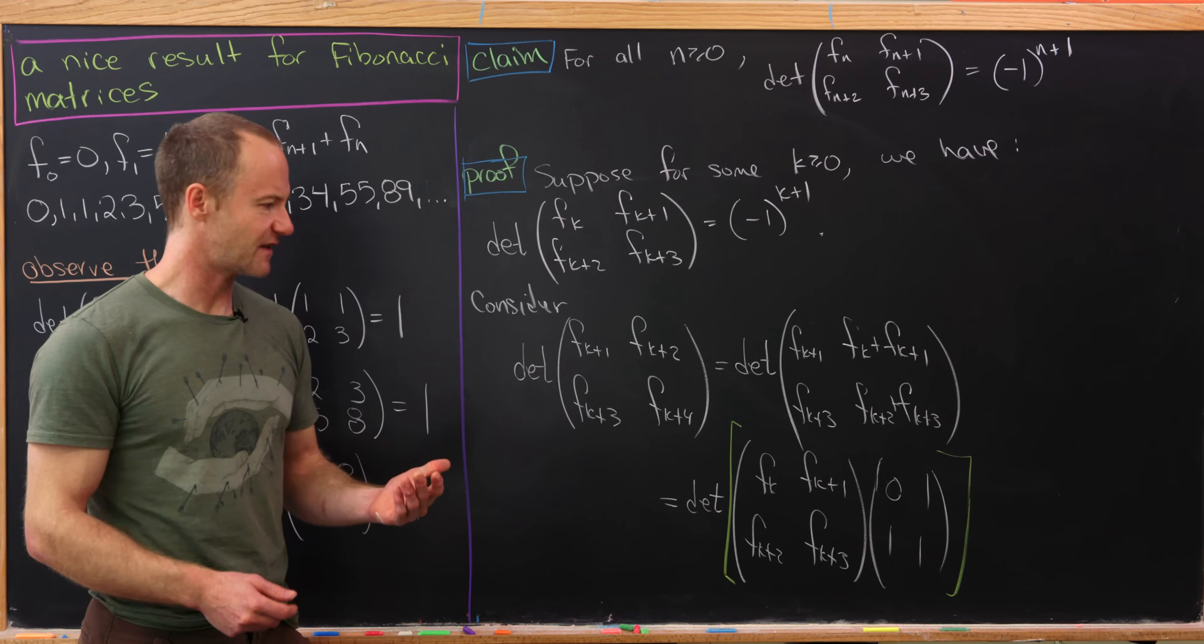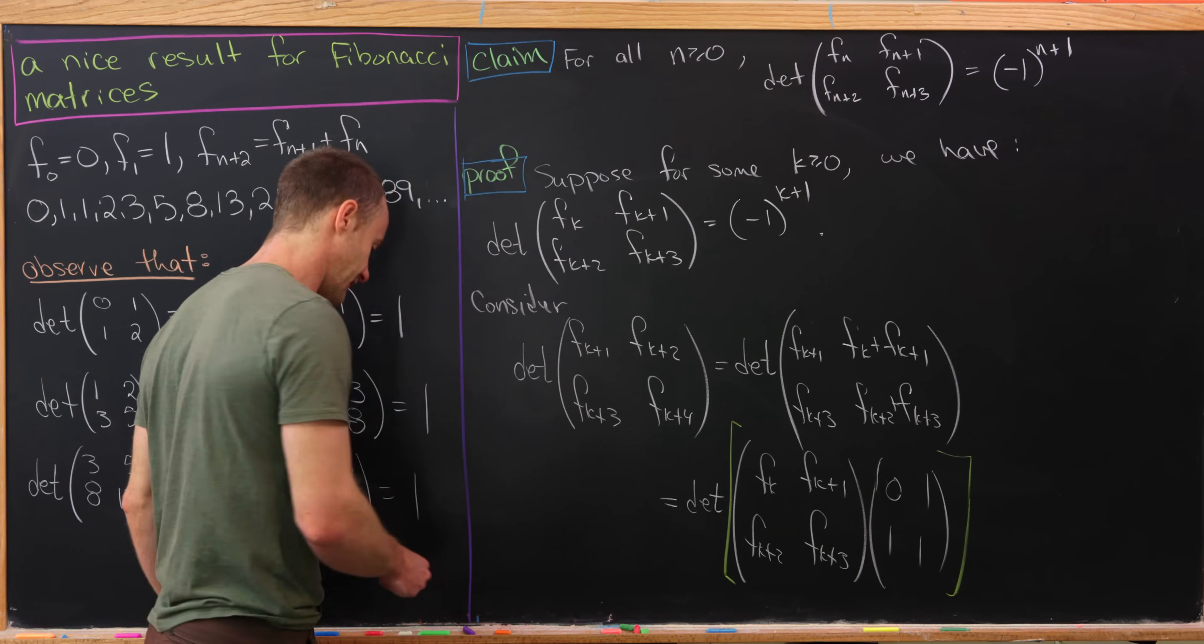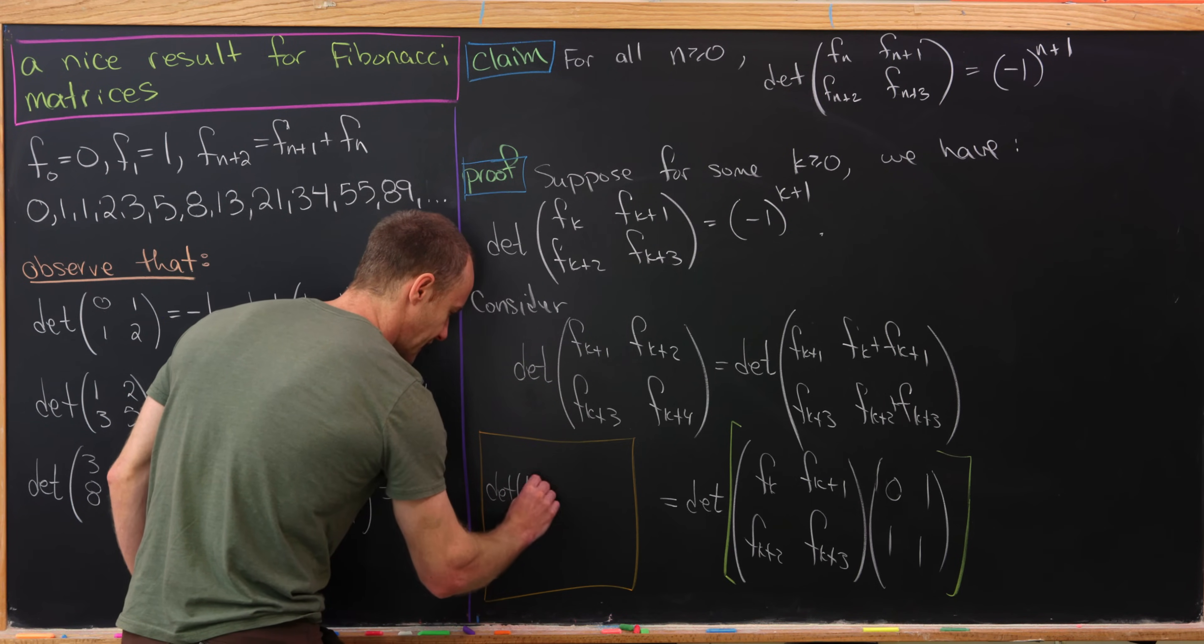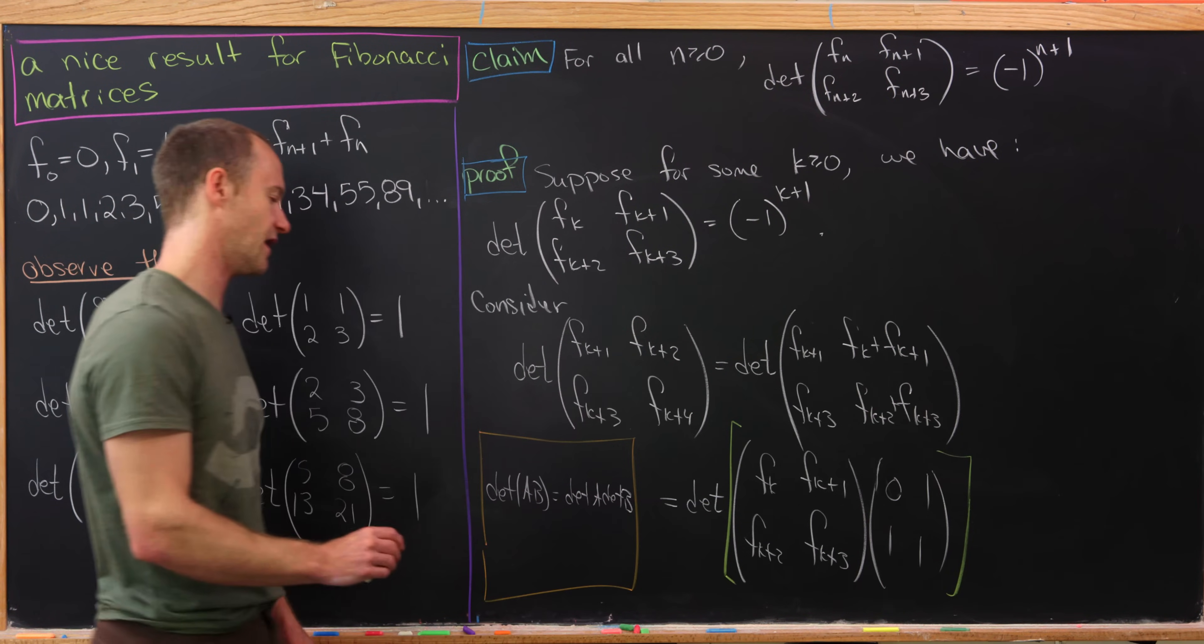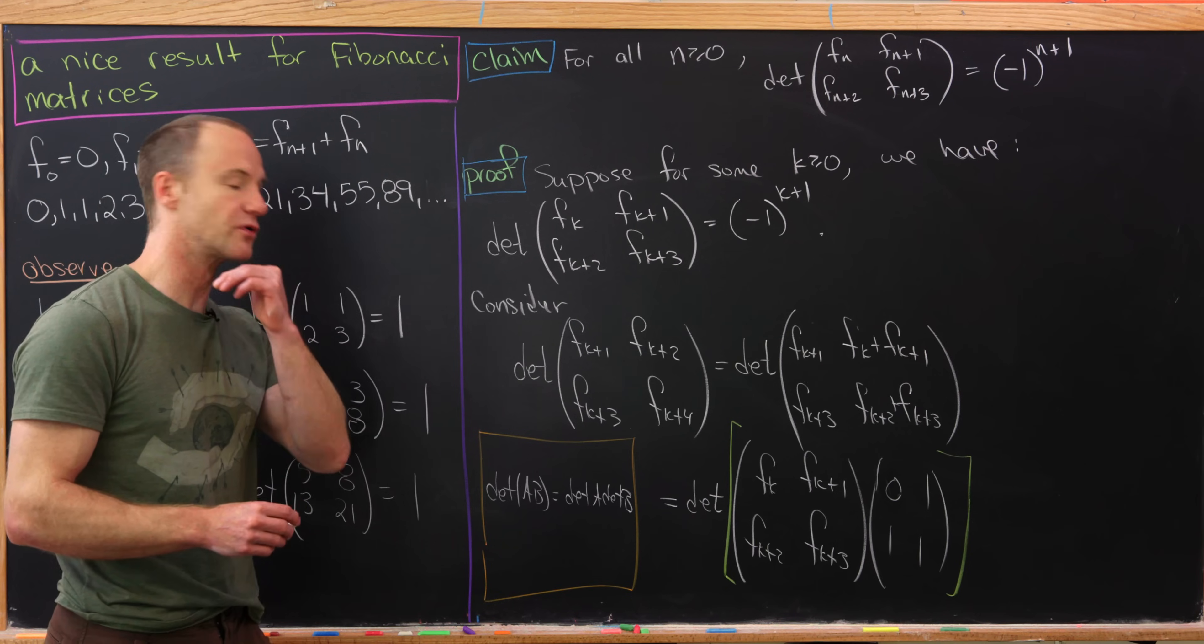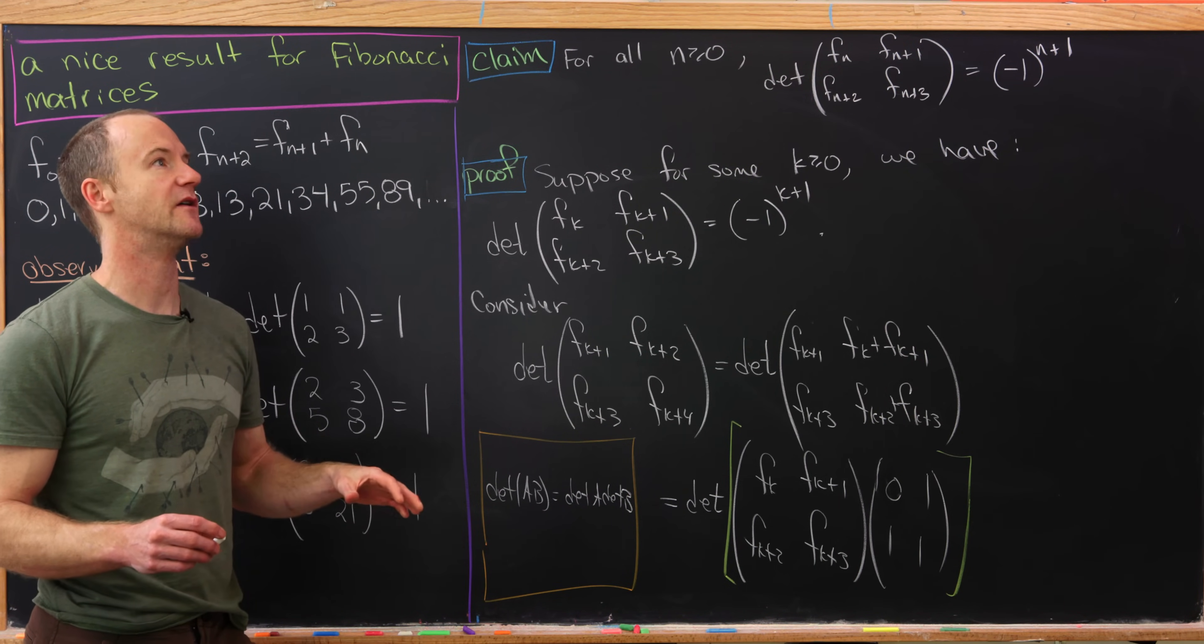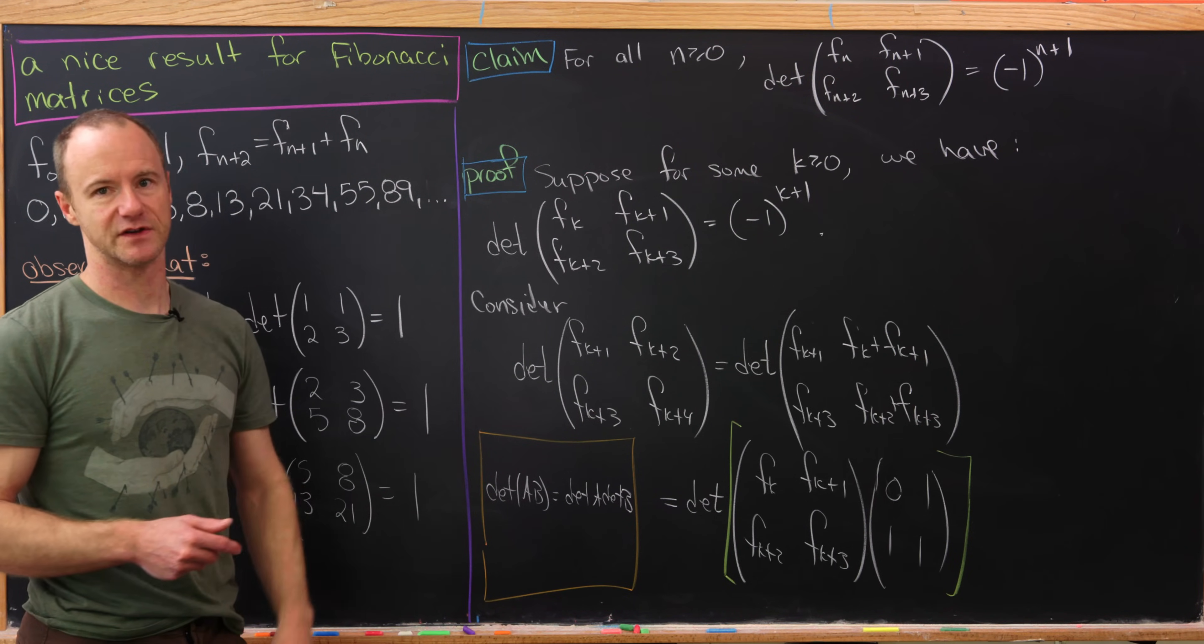But now we're going to use the fact that the determinant is a multiplicative function. So in other words, the determinant of a product of matrices is equal to the product of determinants. So let's write that down. We have determinant of A times B equals the determinant of A times the determinant of B. So that's something that you would generally prove in a linear algebra class. We won't prove that here. That actually makes the determinant into something called a homomorphism from maybe a group of invertible matrices to maybe just non-zero real numbers. So that's kind of interesting.